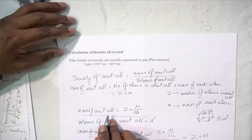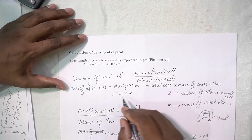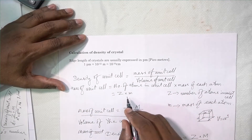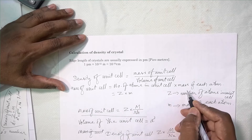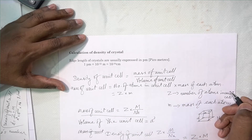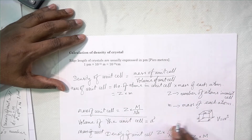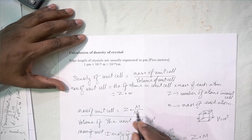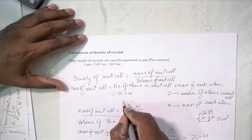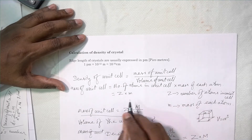Mass of unit cell is equal to: number of atoms in the unit cell multiplied by mass of each atom. That will give you mass of the unit cell. Z is number of atoms, M is mass of each atom.